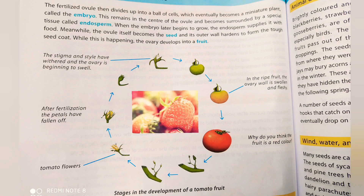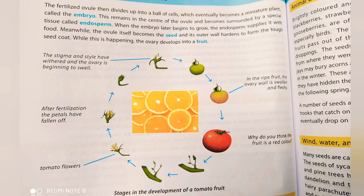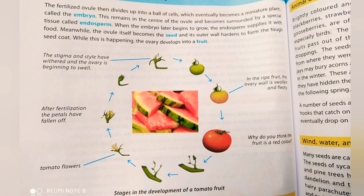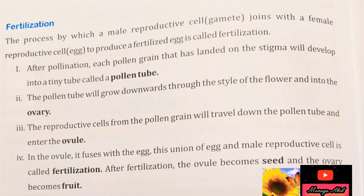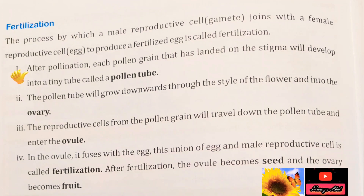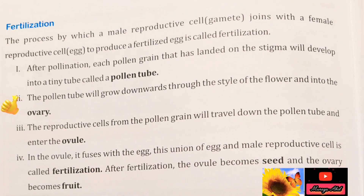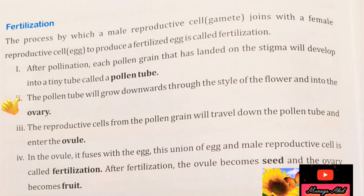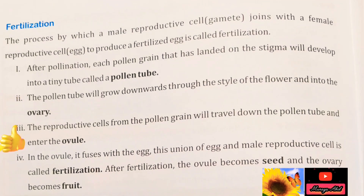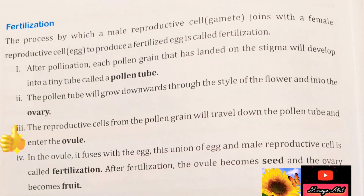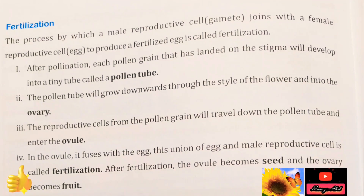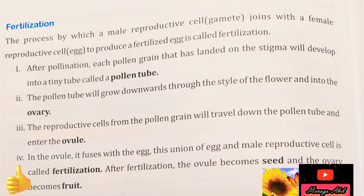Now let's revise the process again. First step is pollination. After pollination, each pollen grain that has landed on the stigma develops into a tiny tube called a pollen tube. The pollen tube grows downwards through the style and into the ovary. The reproductive cells from the pollen grain travel down the pollen tube and enter the ovule, where they fuse with the egg.